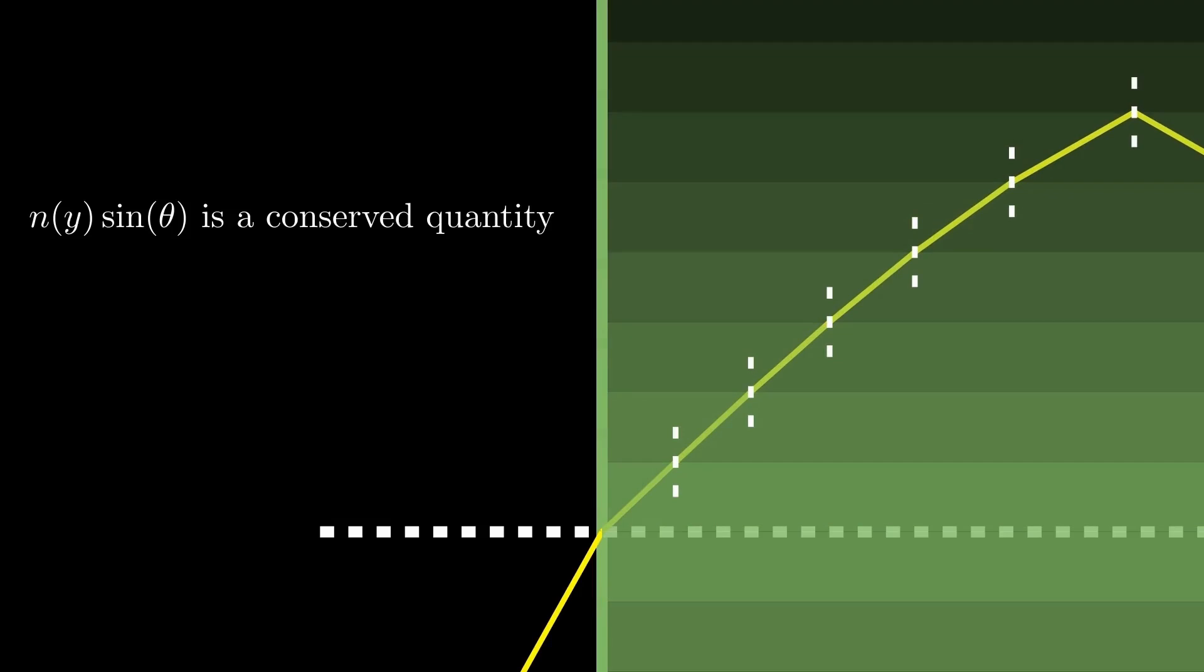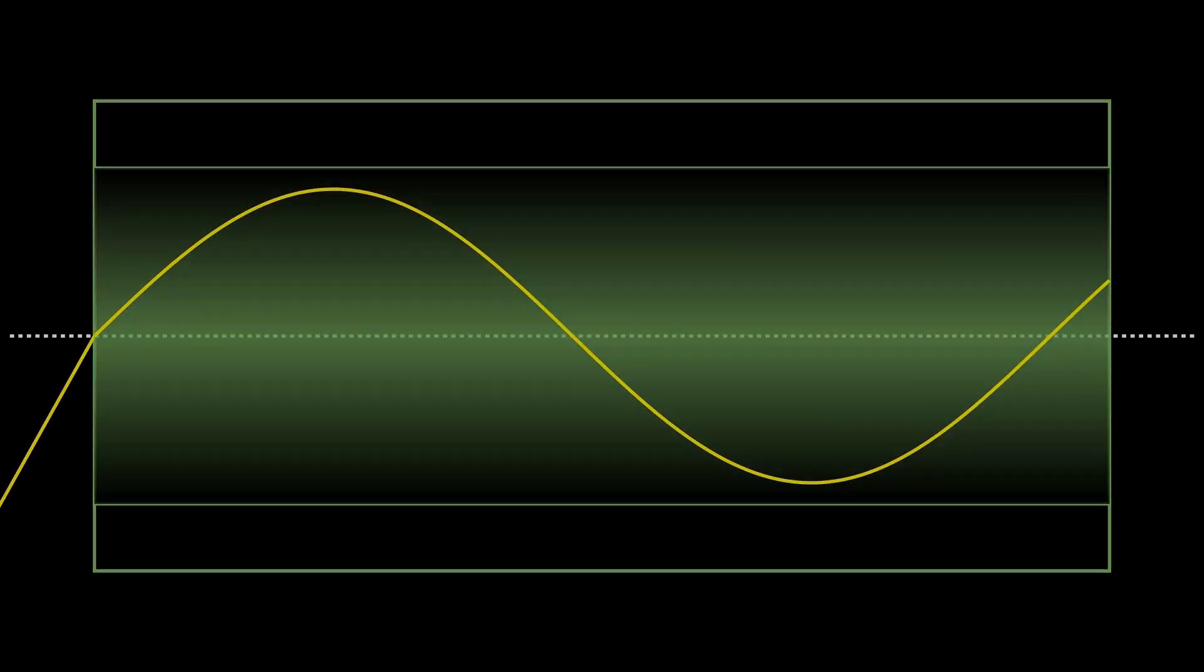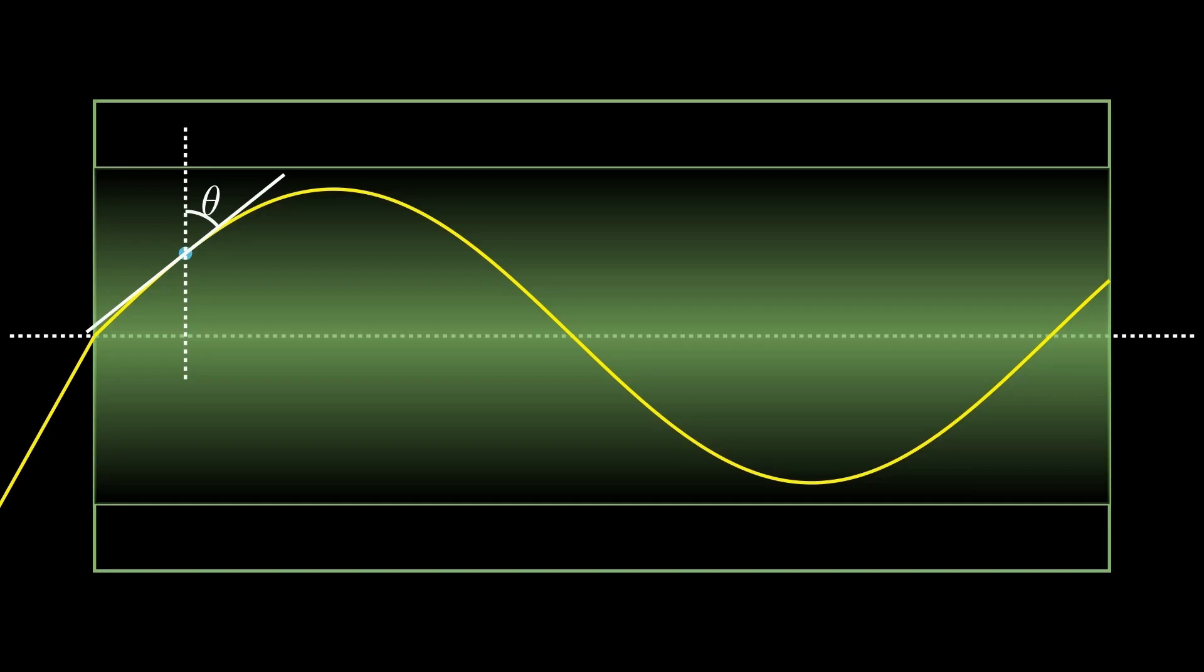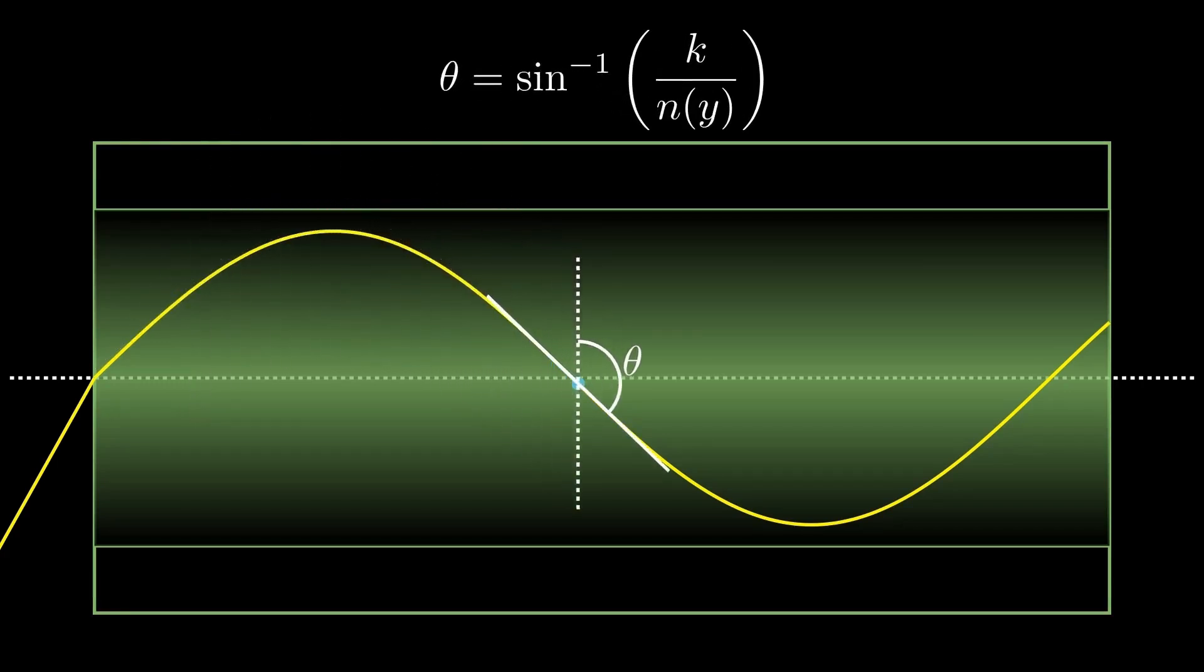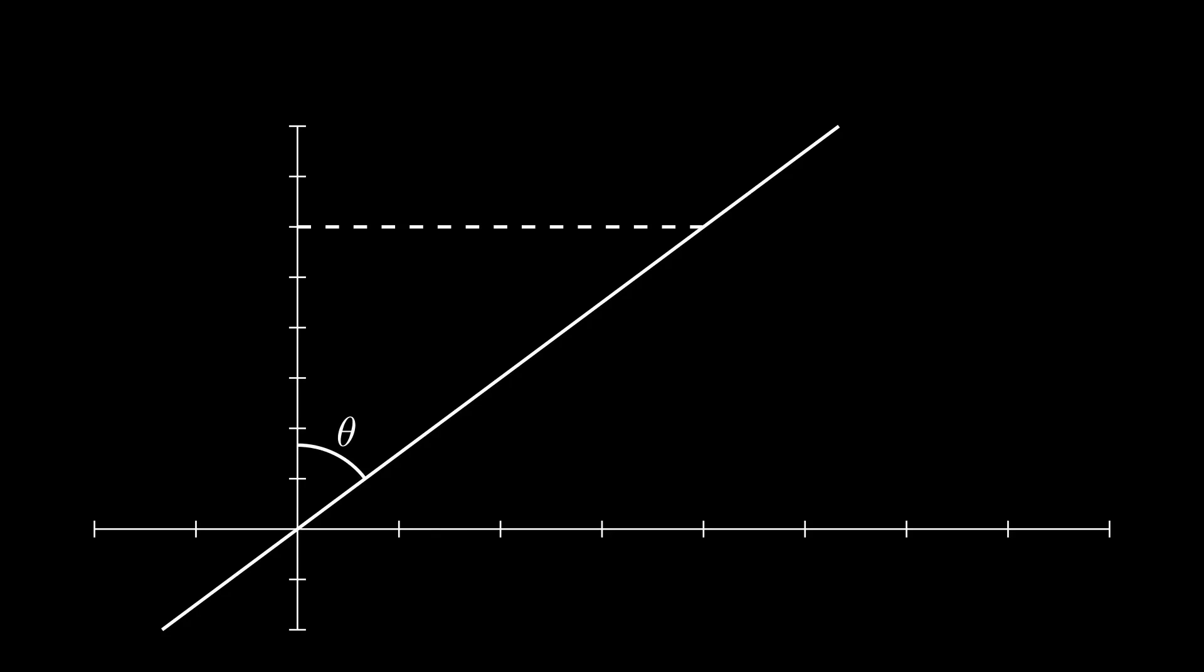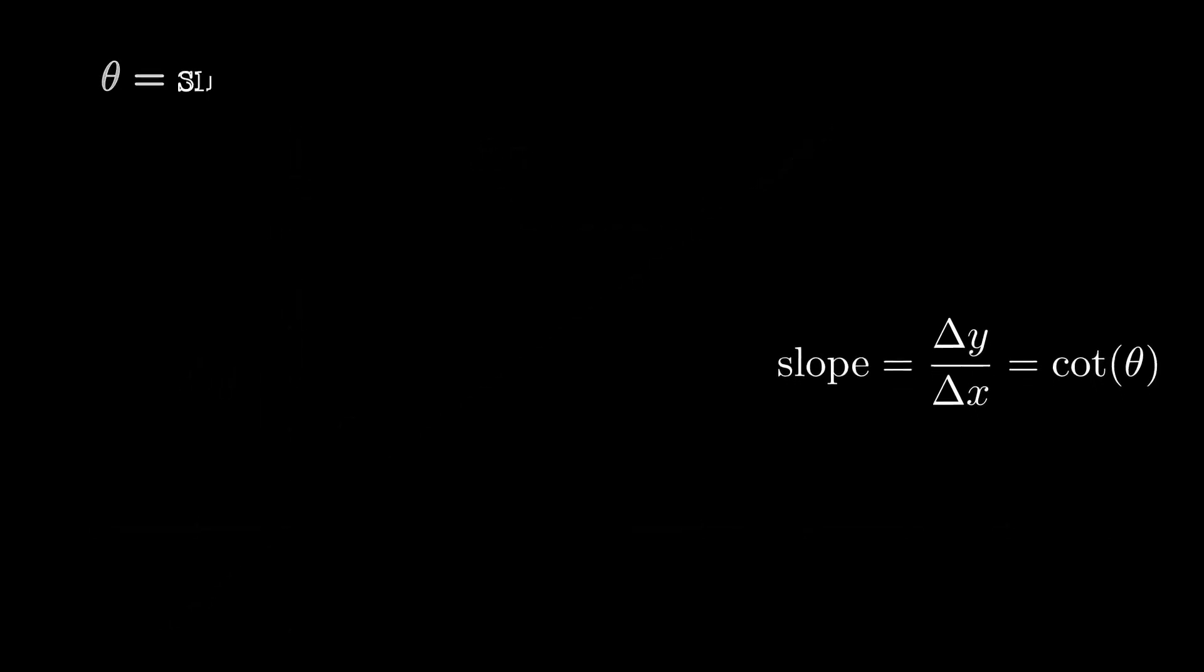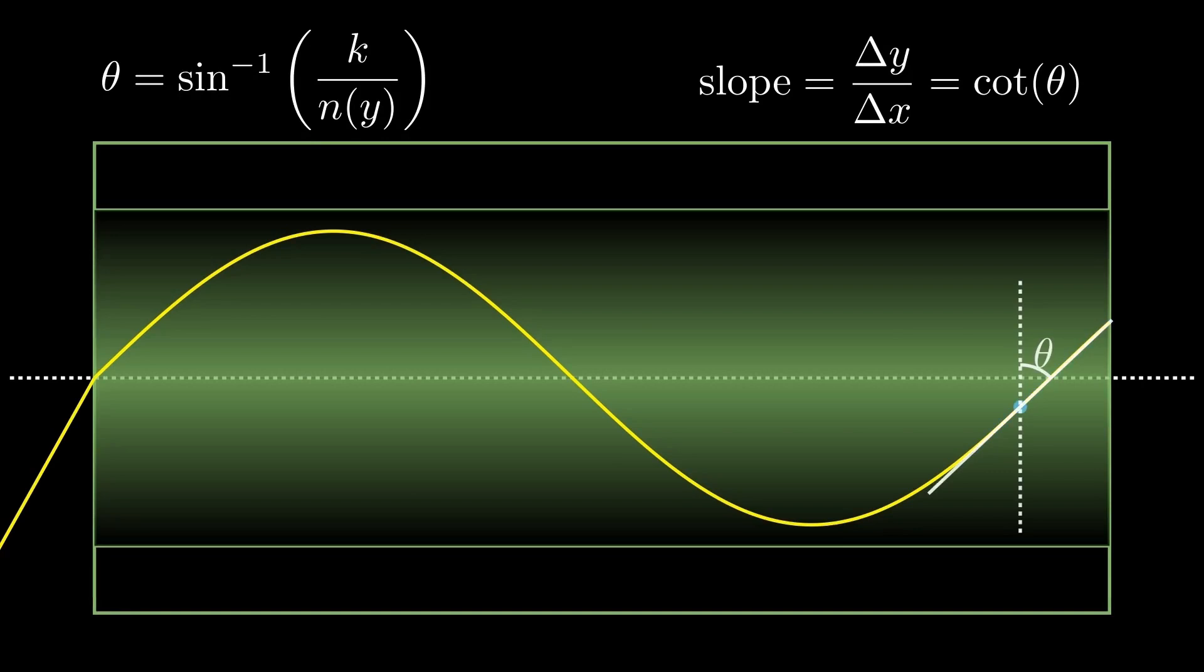Even if you increase the number of layers, n sine theta at any of the normal lines will always be equal to some constant. And of course, this will be true as the number of layers approaches infinity, becoming a true GRIN fiber. Specifically, the index of refraction at any point times the sine of the angle between the tangent and normal lines will always be equal to some quantity k. Let's solve for theta in this equation. Now why is that helpful? If the angle between the line and the y-axis is theta, we can draw a dashed line perpendicular to the y-axis and label the legs of this right triangle delta x and delta y. By definition, the cotangent of theta will be the ratio of delta y to delta x, which also happens to be the line's slope.